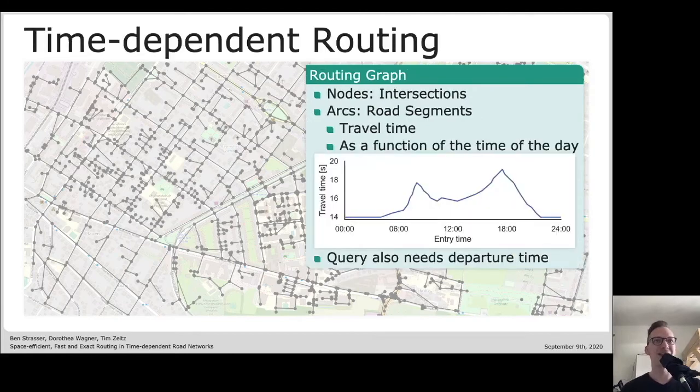However, in our case we have a slightly expanded problem setting. The travel times at the road segments are not scalar numbers but they are travel time functions which depend on the time of the day. During the night traversing a road segment might be fast, then during the morning rush hour it gets slower and slower, becomes a little faster again during midday, and then in the evening there is this huge evening rush hour peak where everything is very slow until it gets faster during the night again.